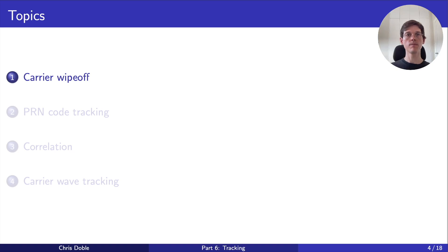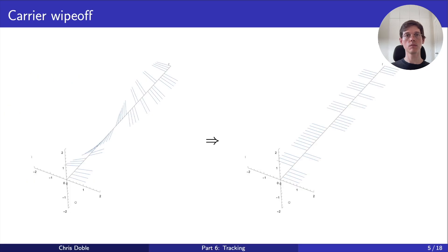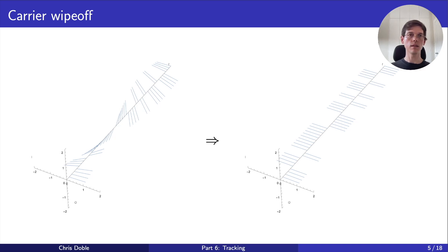Remember from the previous two videos that when a signal is frequency shifted, its samples continually rotate in the IQ plane, and this reduces the magnitude of their correlation with an aligned PRN code. Carrier wipe-off is the process of undoing this rotation to increase the magnitude. In the tracking phase, as part of carrier wipe-off, we also undo the rotation caused by the carrier wave's phase. By doing this, each sample, and thus each correlation, should lie close to the I-axis. They're unlikely to lie perfectly on the axis due to noise in the signal, but if we're tracking the signal's parameters well, we should get pretty close.